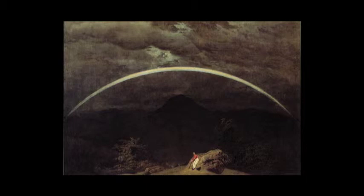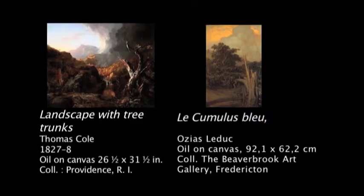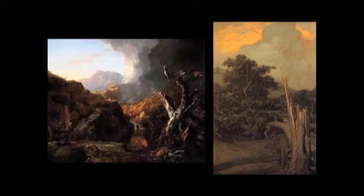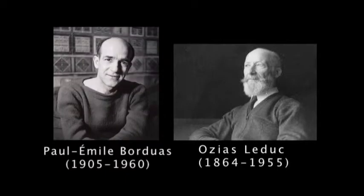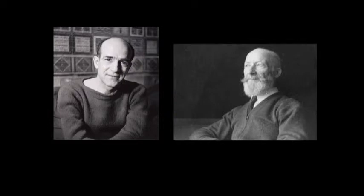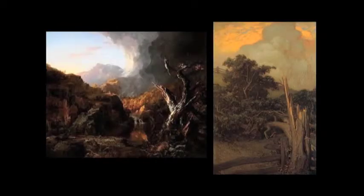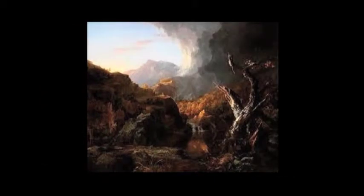Some artists have indeed treated the idea of storm directly. Since we are in Canadian art, I put together one American artist on the left, Thomas Cole, and on the right, Osias Leduc — L-E-D-U-C — who was the teacher of Paul-Émile Borduas. He was living partly in the 19th century and died in 1955. Both of them are treating the same subject. In the Thomas Cole painting on the left, you see the storm has passed already and left behind broken trees that you see in the foreground.